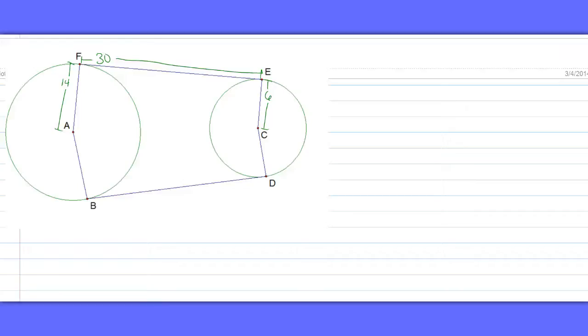Here is an example of a pulley problem. We're always going to draw in the segment between the centers of the circles, and we're also going to draw a segment that goes from the center of the small circle.